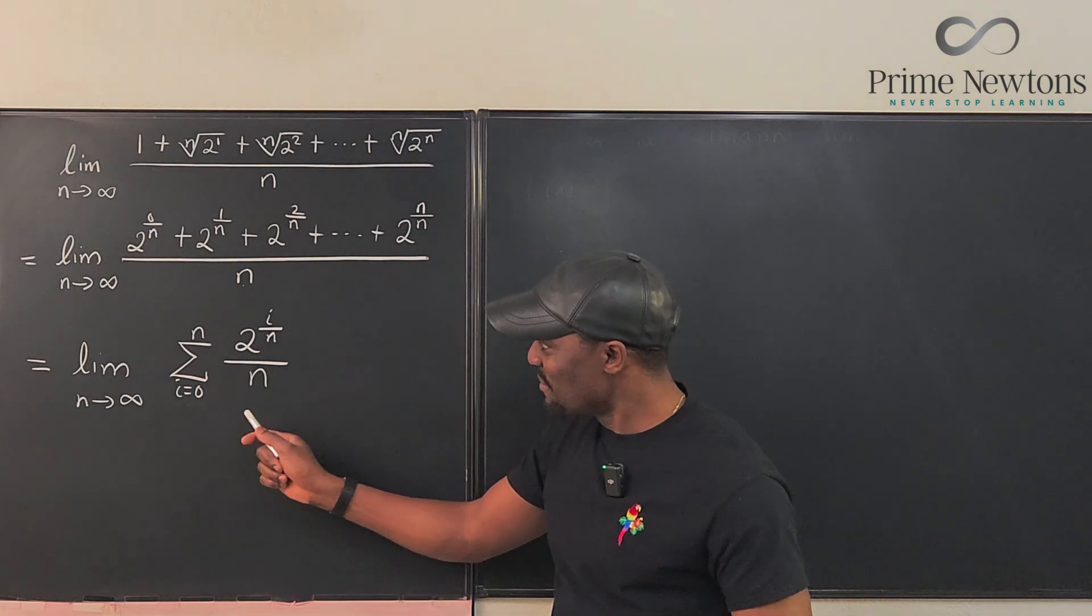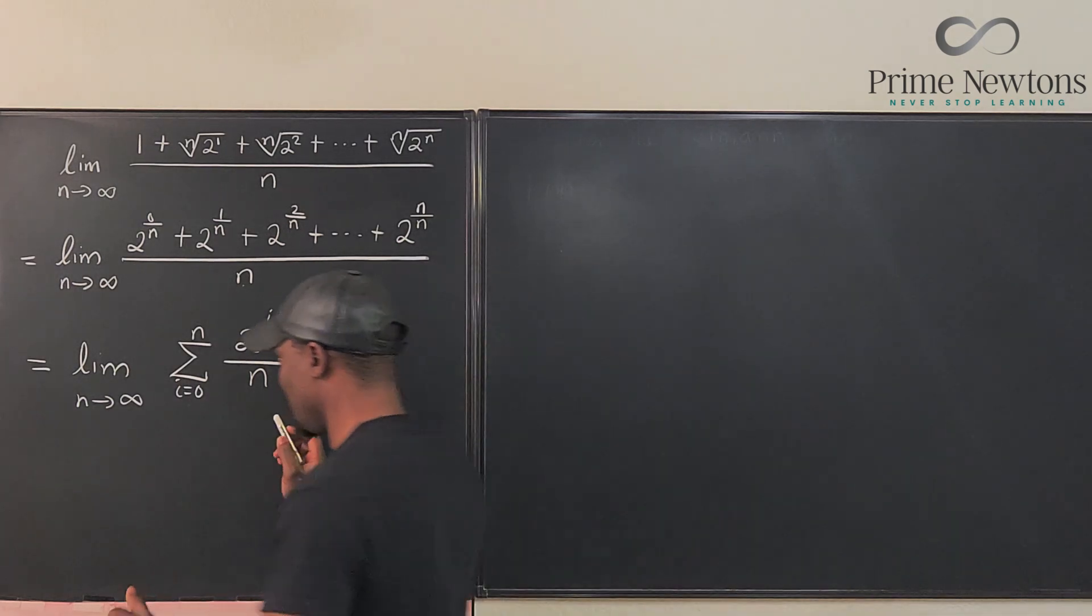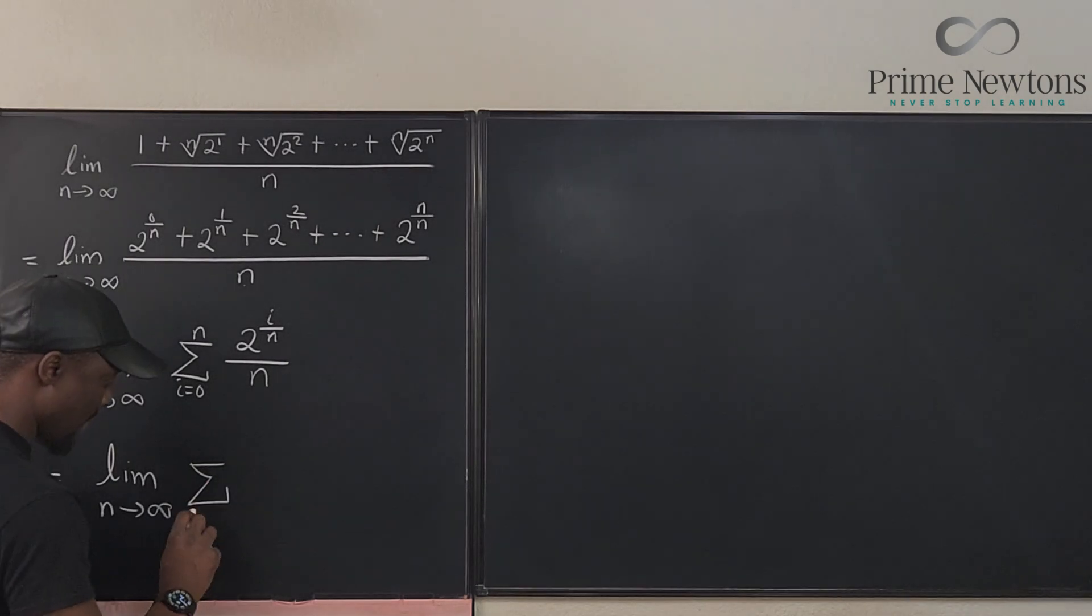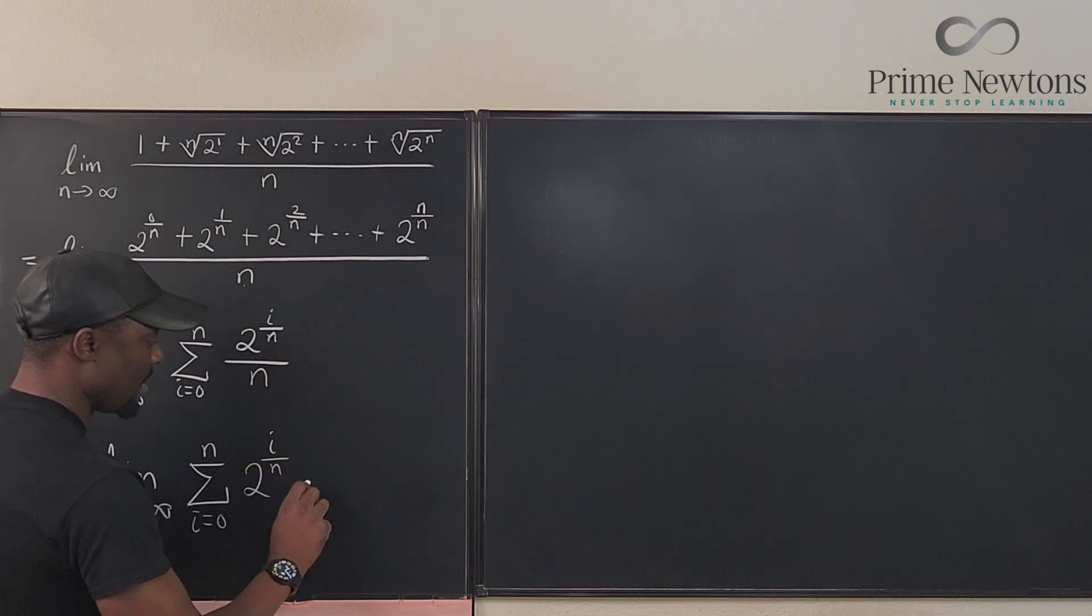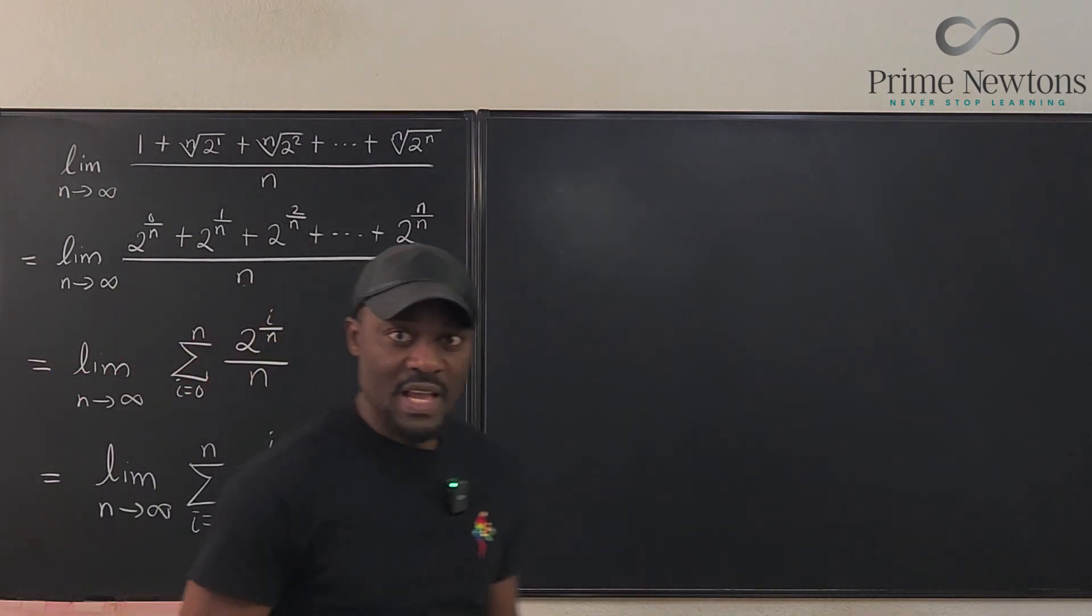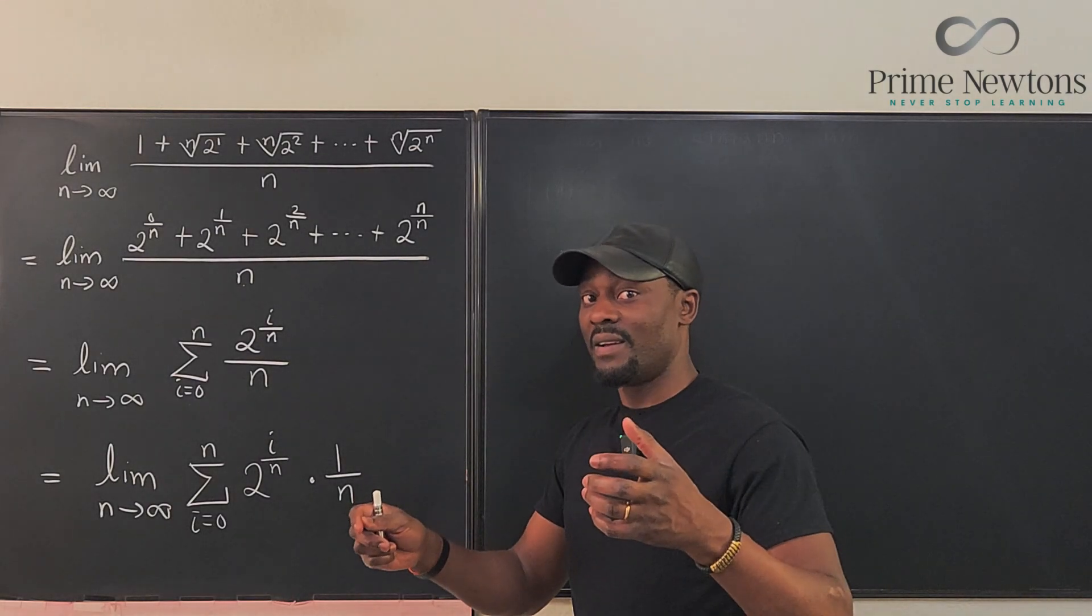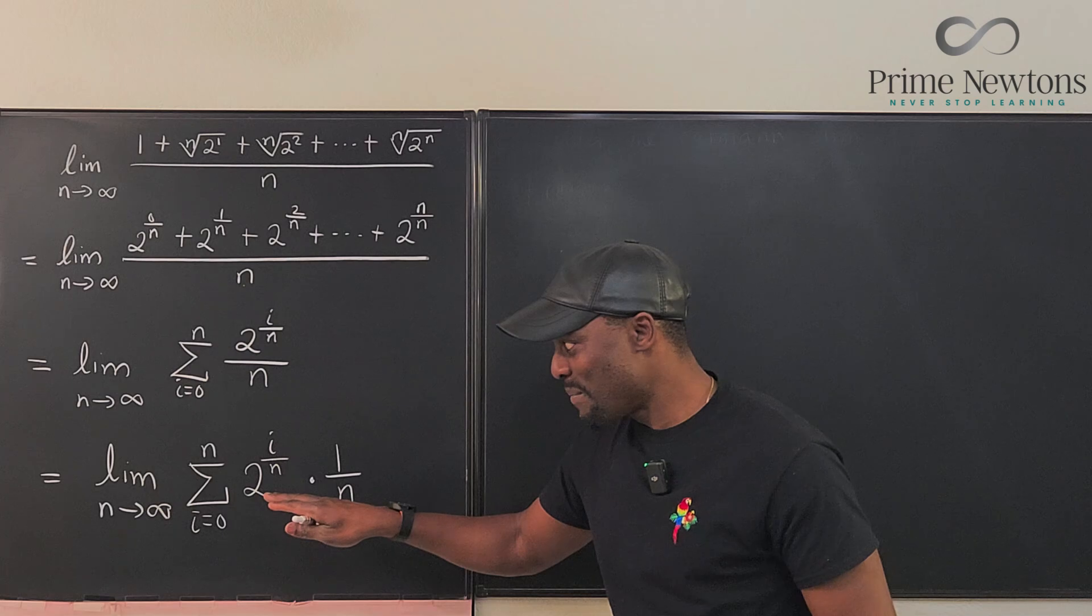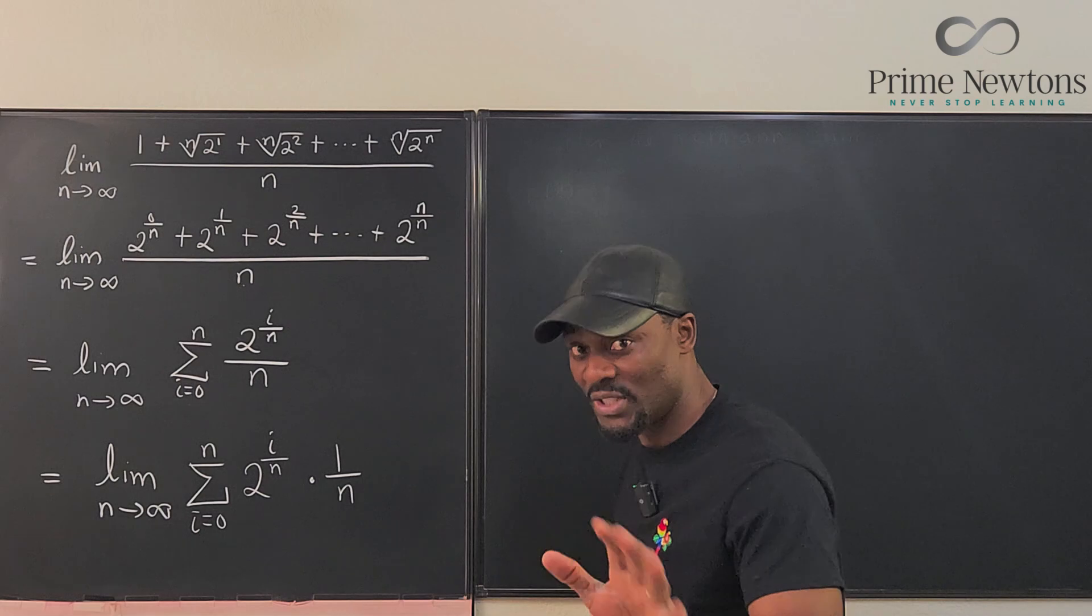But this is more like you're writing the Riemann sum, like the sums of all the rectangles that you have split. Let me show you. This is the same thing as saying this is the limit as n goes to infinity of, you have the sum from i equals 0 to n of 2 raised to power i over n multiplied by 1 over n. Now this is a Riemann sum for a particular integral. Remember the definition of the integral? Because this is the most accurate and predictable way to evaluate this limit. Now, see what I mean by this.